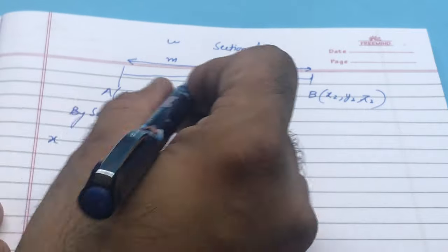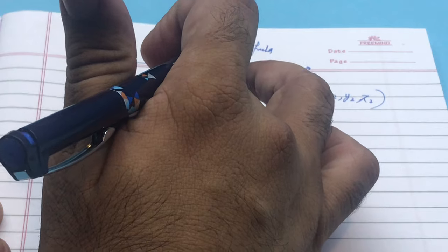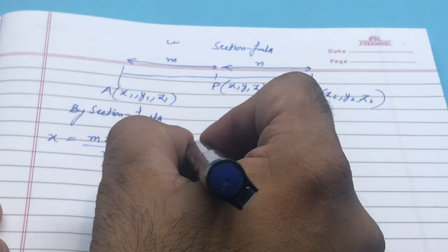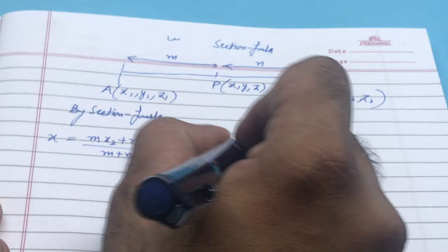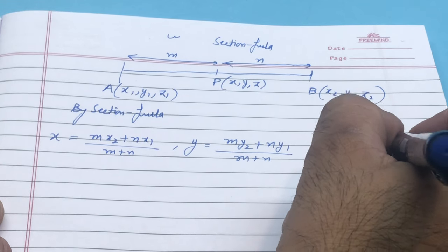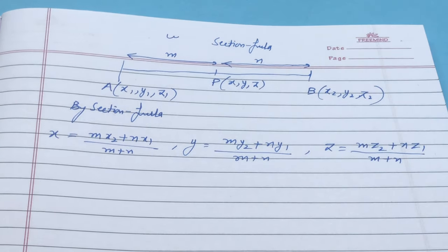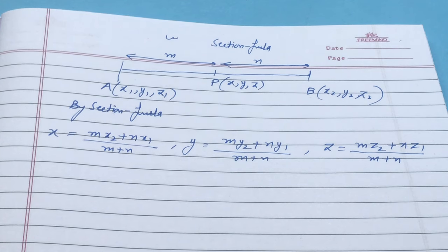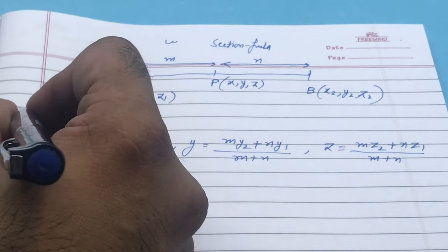For internal division, the coordinates of P are: x = (mx2 + nx1)/(m+n), y = (my2 + ny1)/(m+n), and z = (mz2 + nz1)/(m+n). Remember, in Class 10 you already knew x and y. The ratio m:n applies when point P internally divides AB. This is the case of internal division.